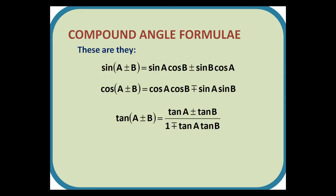Compound angle formulae. These are they: sin(A ± B) = sin A cos B ± sin B cos A. Cos(A ± B) = cos A cos B ∓ sin A sin B. And tan(A ± B) = (tan A ± tan B)/(1 ∓ tan A tan B).